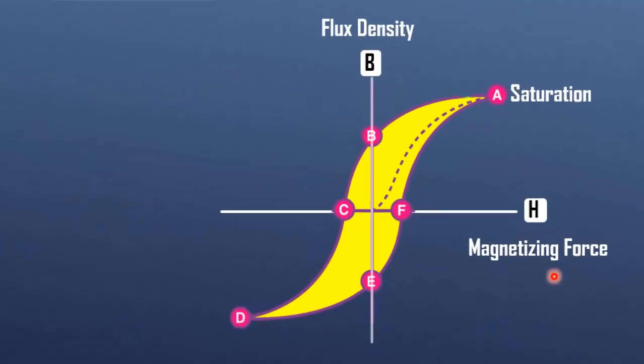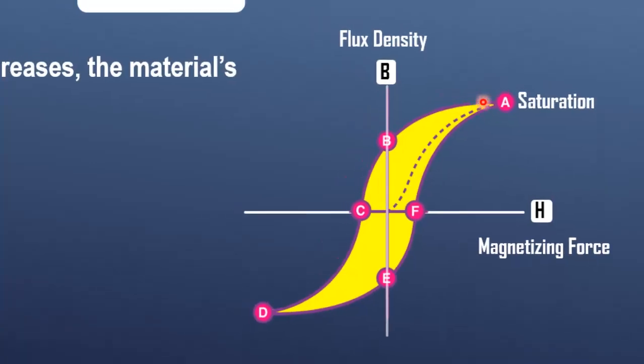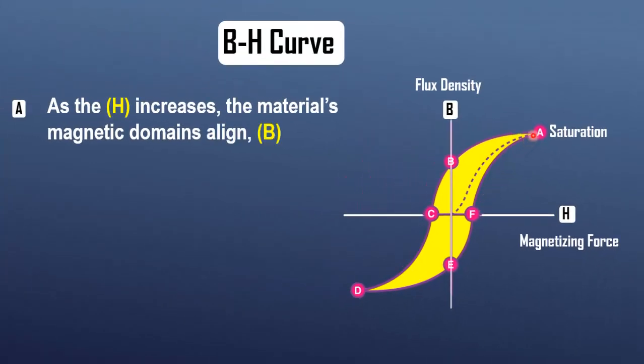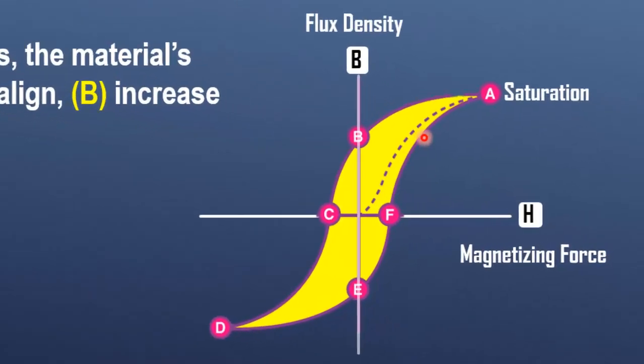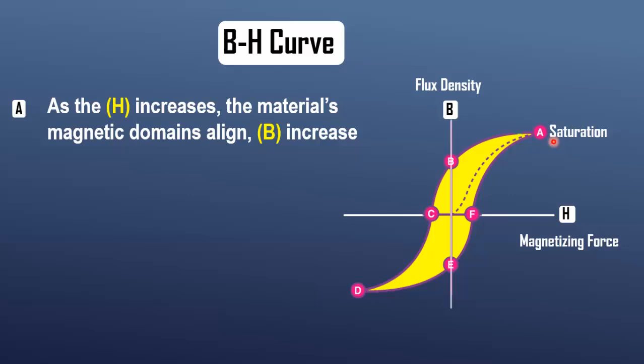The BH curve shows how a magnetic material reacts when an external magnetic field is applied. As the magnetic field intensity increases, the material's magnetic domains align. At some point, all the domains are aligned and the material reaches saturation. This is the flat top of the curve.